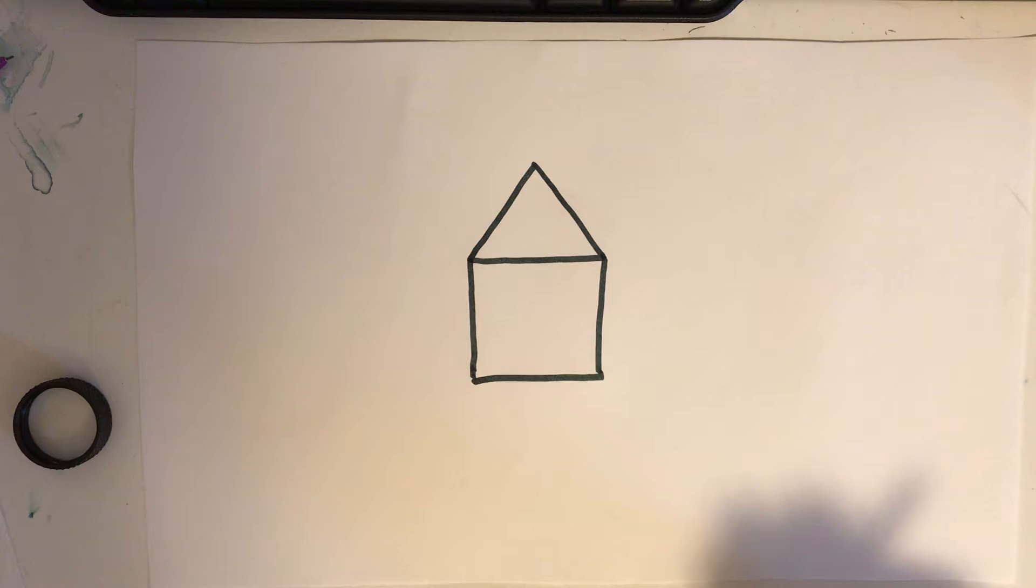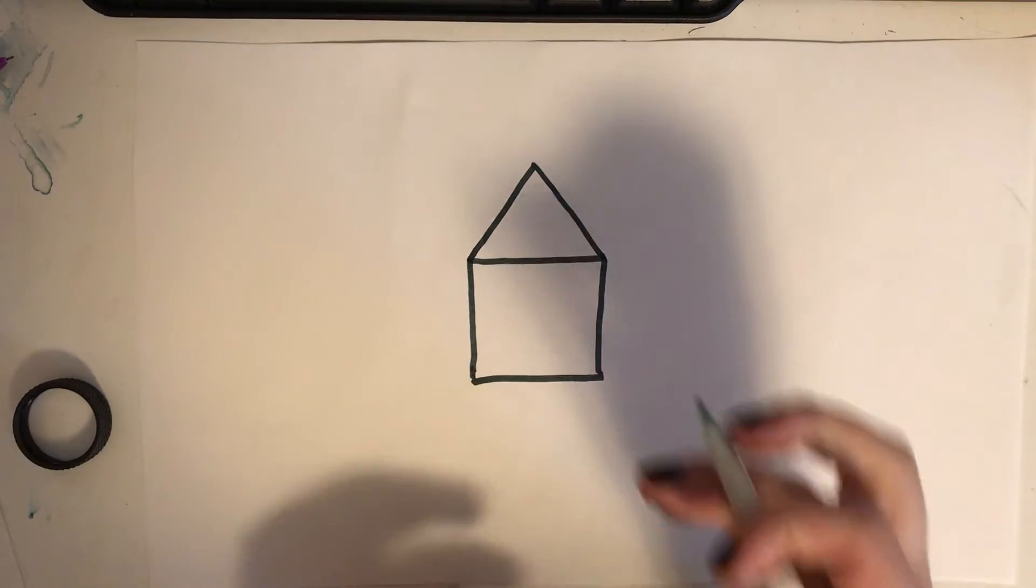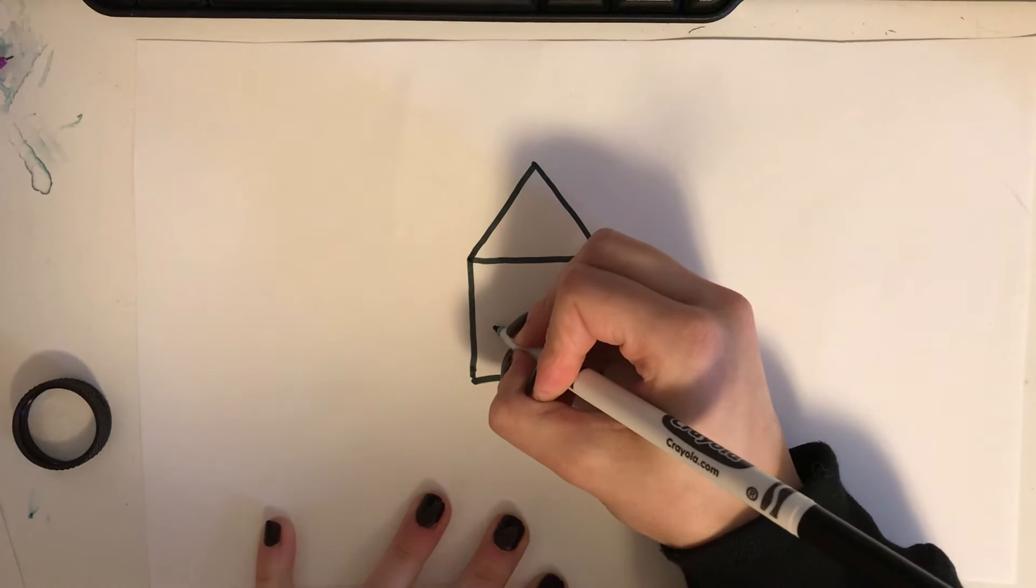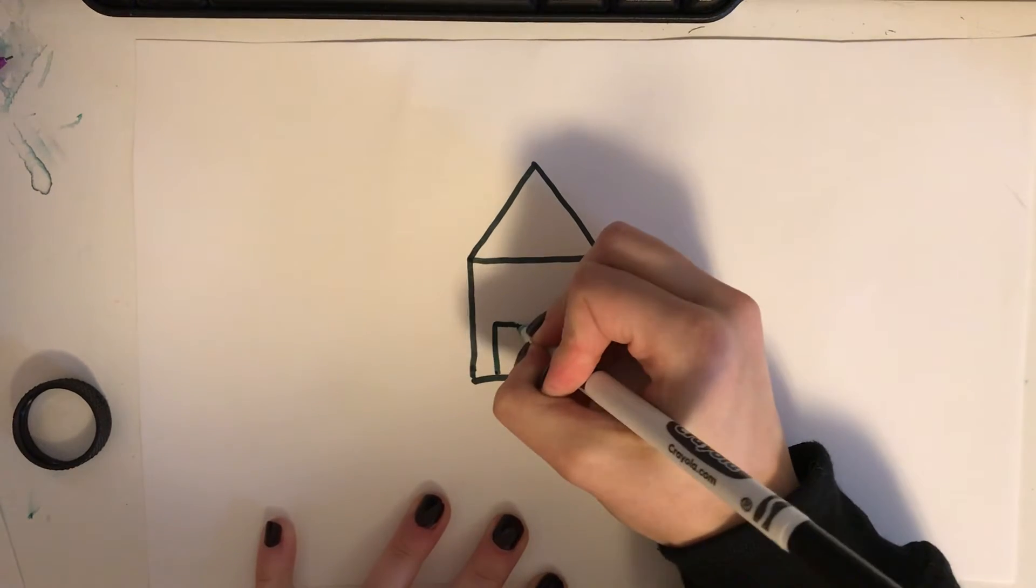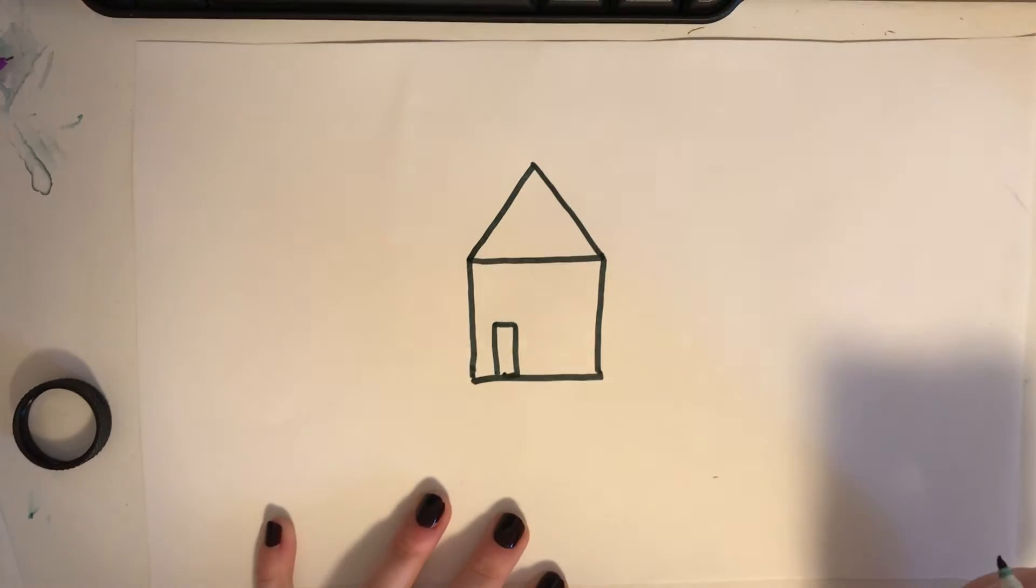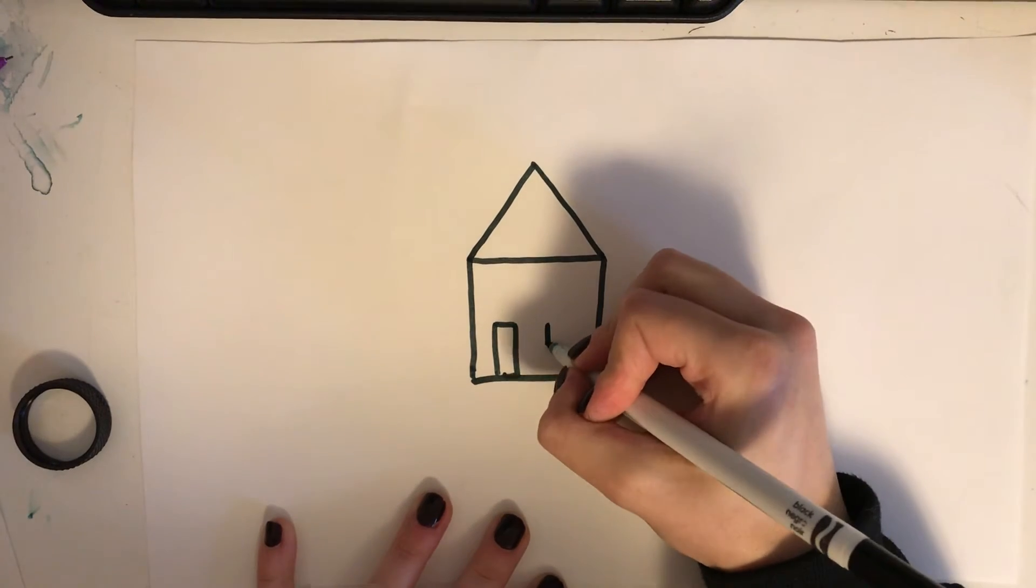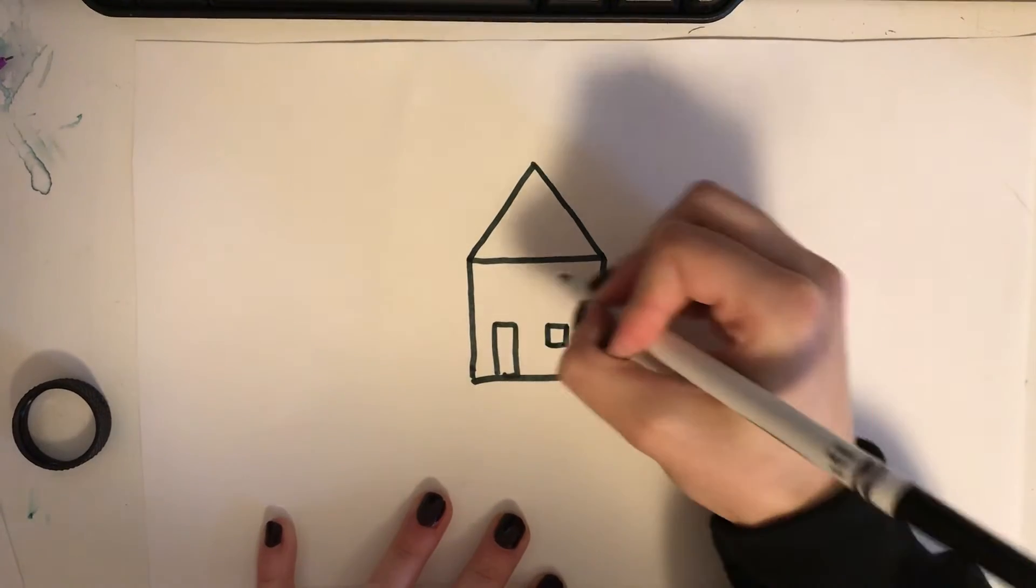Next we're going to add some other shapes, and I bet you can tell what we're making. I'm going to add a rectangle for a door and some squares for windows.